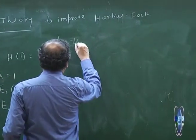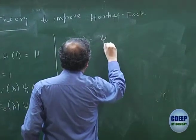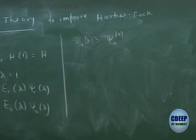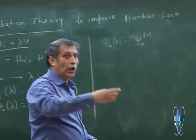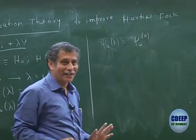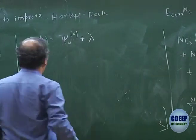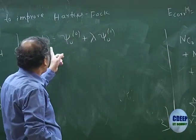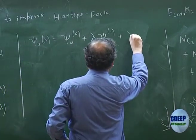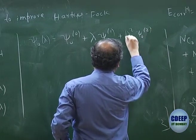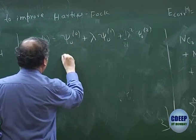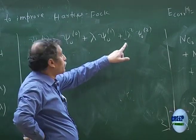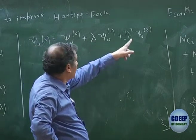Write ψ₀(λ) in general as a power series in λ. At λ = 0, its eigenfunction is ψ₀⁰. Then we do a power series expansion: ψ₀(λ) = ψ₀⁰ + λψ₀¹ + λ²ψ₀² + ... where ψ₀¹ is the first-order correction and ψ₀² is the second-order correction. This is a Taylor series expansion; each of these are called order corrections.